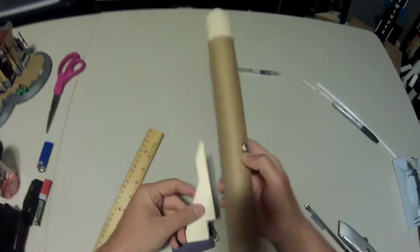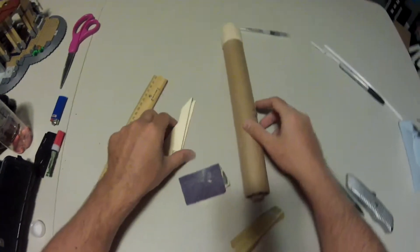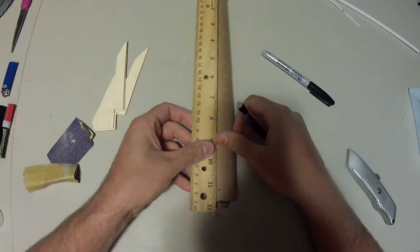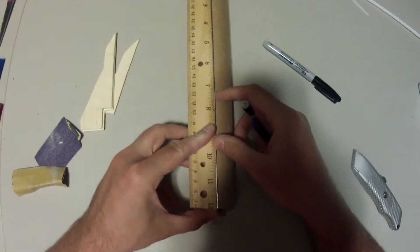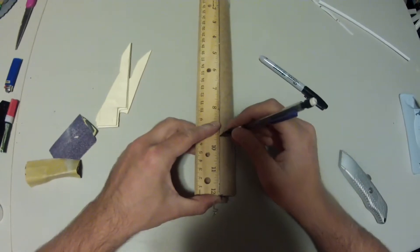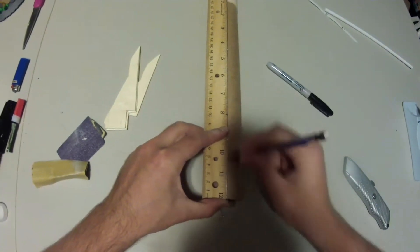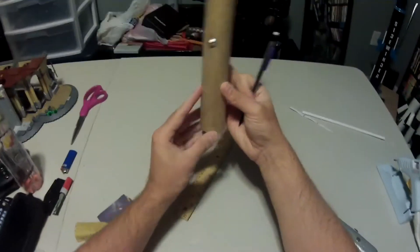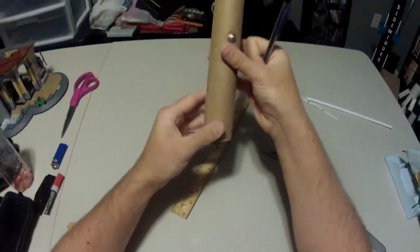And once you have those edges as straight as you can now you're going to want to take those marks and make them longer so you can guide your fin onto the rocket. You want to make these lines as straight as possible. If your fins are crooked it's not going to fly straight.